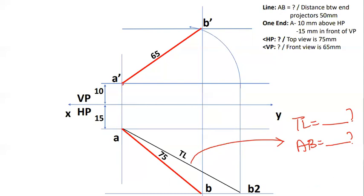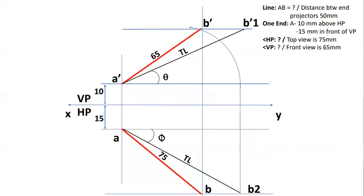After that, you can measure the true length. This is the result for the exam — it may be approximately 78mm. If you apply the true length method, you can measure the true length. The HP inclined angle is theta and the VP inclined angle is phi. That is how you measure the true length.